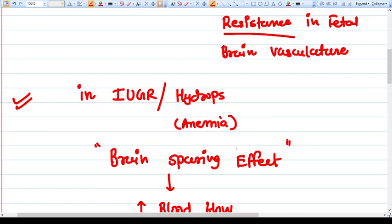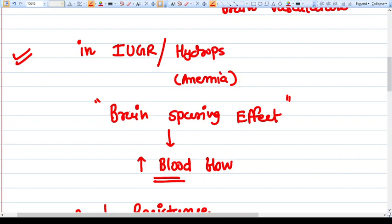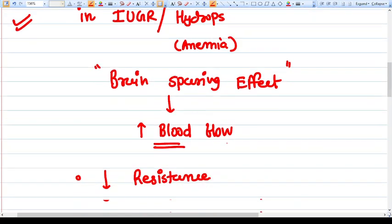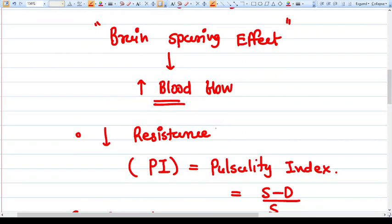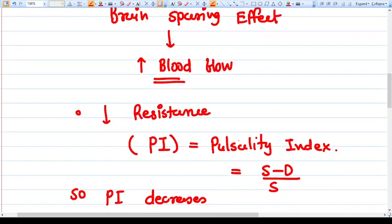What we see here is a brain sparing effect that develops with these conditions in which blood flow to the brain is increased. To increase the blood flow, the vasculature decreases its resistance.